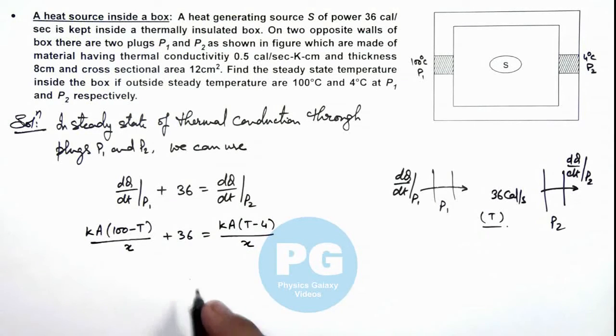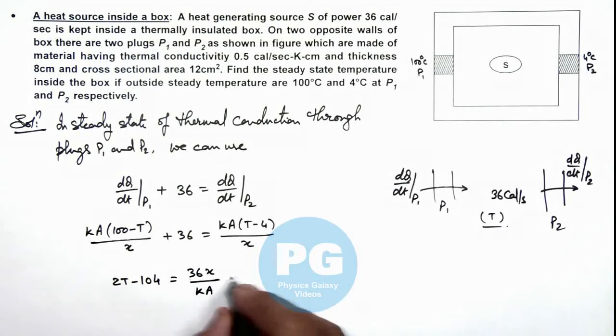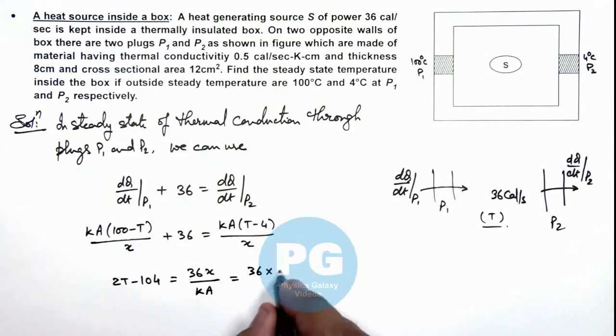If we simplify this relation, here this will give us 2T minus 104 is equal to 36x by kA. If we substitute the values this is 36 multiplied by x is 8 centimeter divided by kA, 0.5 times area is 12. Here you can see I am not transforming units to SI system because...